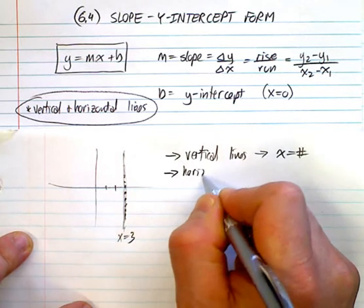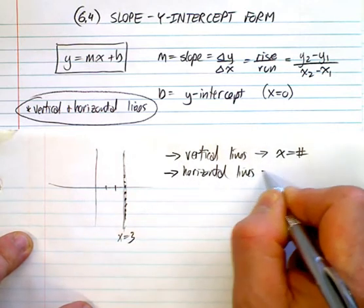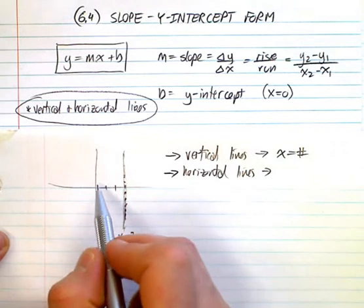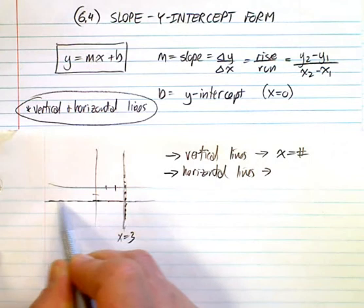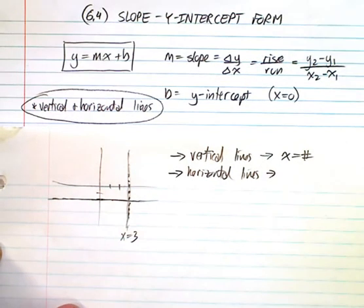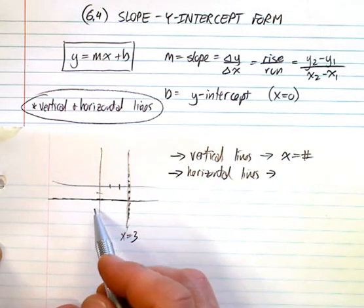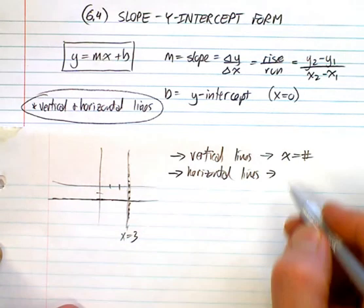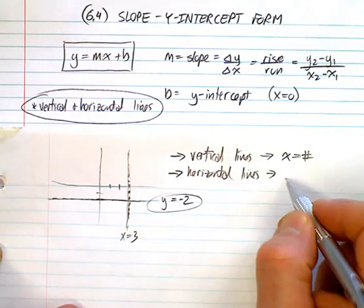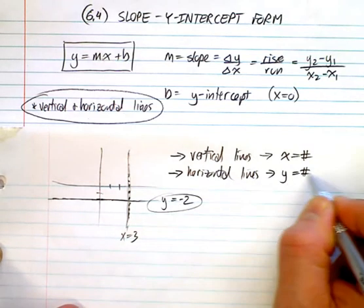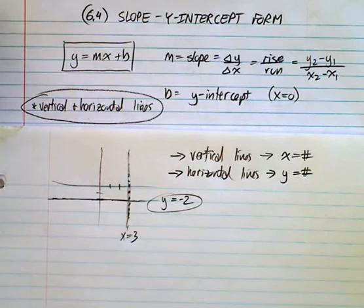The other thing I wanted to show you was similar, but going horizontally. So if I gave you a horizontal line right there, you'll notice that the x values change the whole way along this line. What doesn't change is the y-value, and that y-value is negative 2. So the equation of this line is y equals negative 2. They're in the form y equals a number. That's a really important point to grasp.